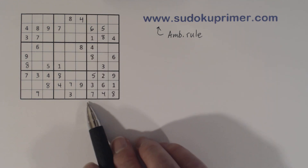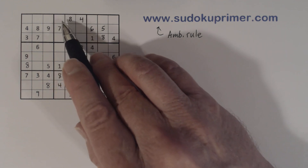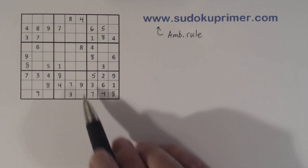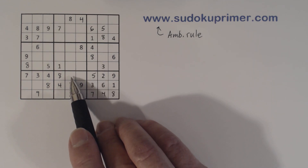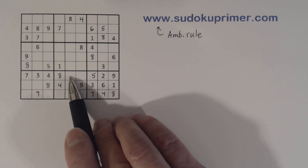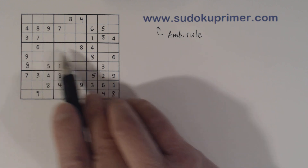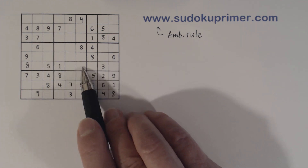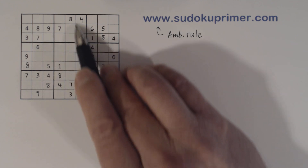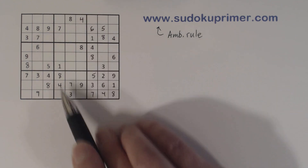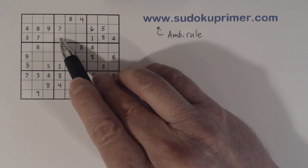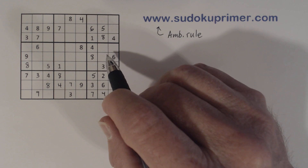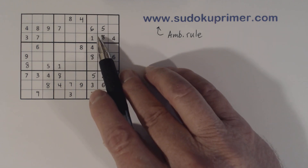Another thing I want to point out: the 6 is actually constrained to one of these 2 cells in this box. Using double column elimination, we have 1-6 twins here, and a 6 here and a 6 here. So the 6 is constrained to these 2 cells, covering these 2 columns. So we know the 6 in box 2 has to go here or here. We'll use that information in a little bit.